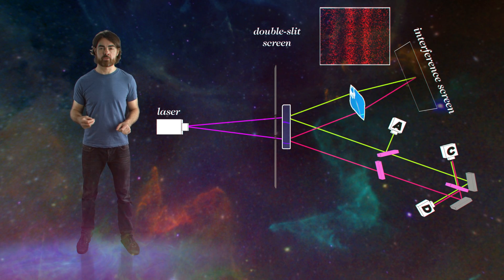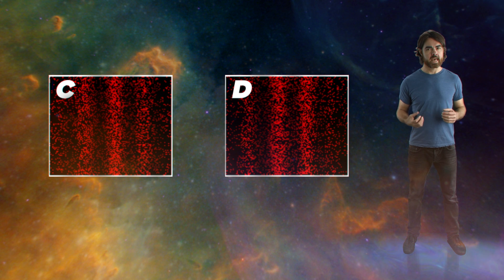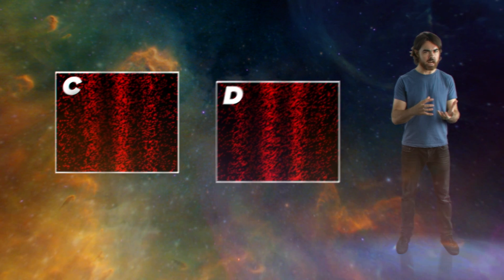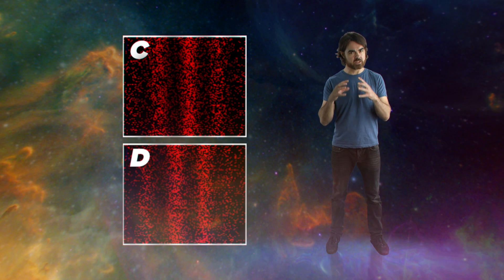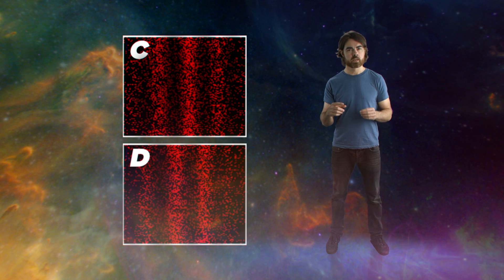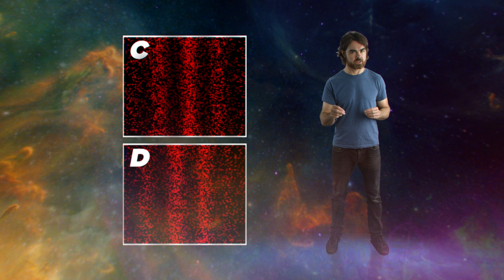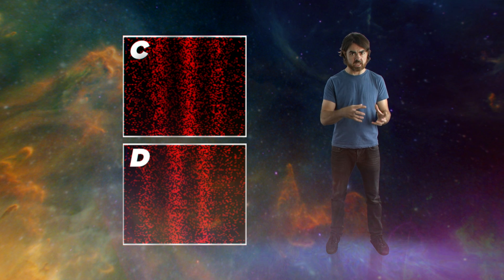One important extra piece of information: that interference pattern is slightly different depending on whether C or D fire. The pattern for C has peaks that line up with the valleys of the interference pattern from D. But you see the clear patterns when you separate those C and D photons.